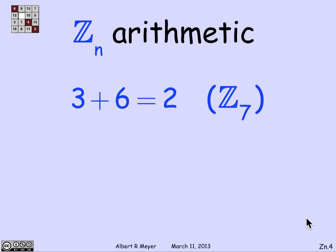Now arithmetic in Z_n is really just congruence arithmetic, except that it's equality now instead of congruence. So we can say, for example, in Z_7, that 3 plus 6 is literally equal to 2 because 3 plus 6 is 9. The remainder on division by 7 is 2.